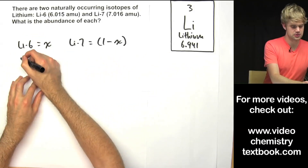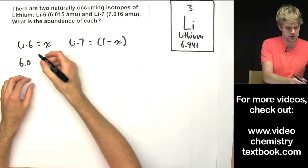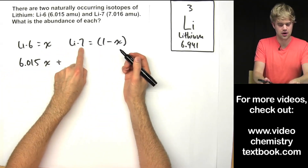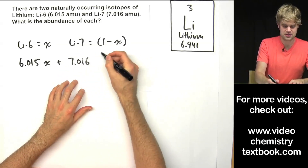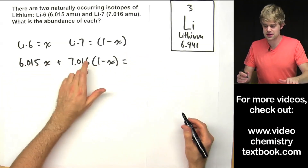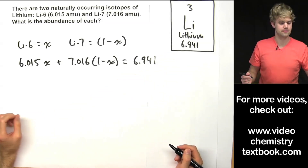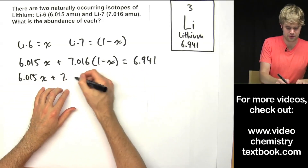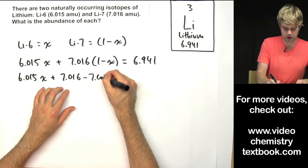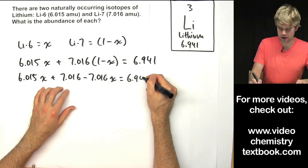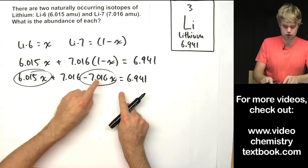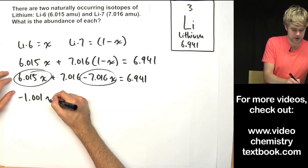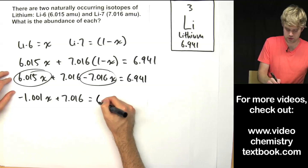Now we'll set up an equation using the abundances and the atomic mass. We take the mass of lithium-6 — 6.015 — times x, plus the mass of lithium-7 — 7.016 — times (1 minus x), and set that equal to the atomic mass of 6.941. Rewriting and distributing: 6.015x plus 7.016 minus 7.016x equals 6.941.